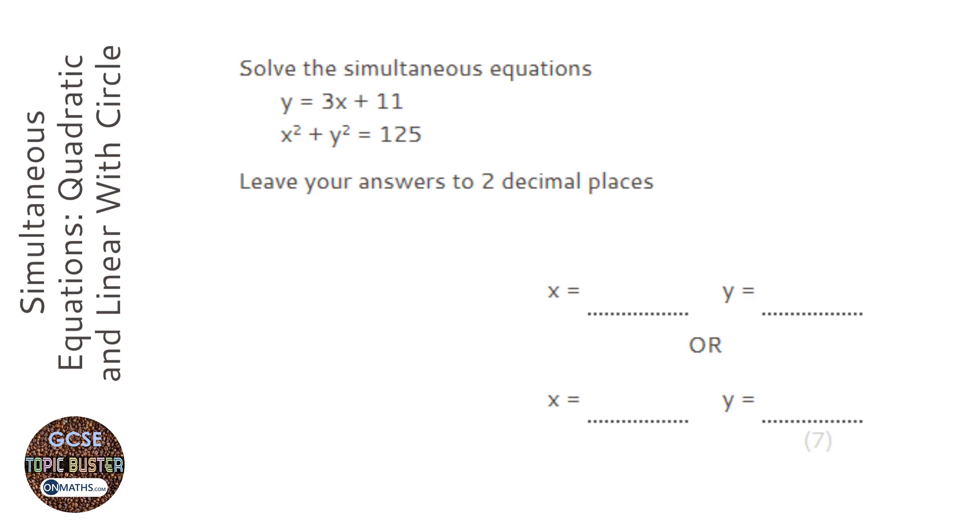So looking at the first equation, we've got y equals this, 3x plus 11. And in the second one we've got a y here. So all we need to do is replace that y in the second one with this bit here, and I'm going to put it into brackets. If you don't put it into brackets, you will get the wrong answer, so make sure you put it into brackets.